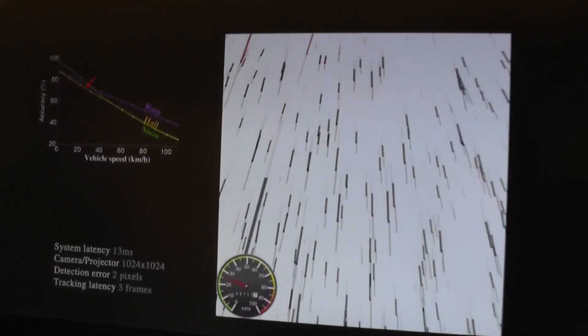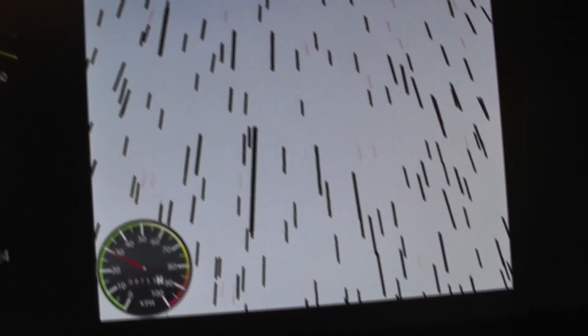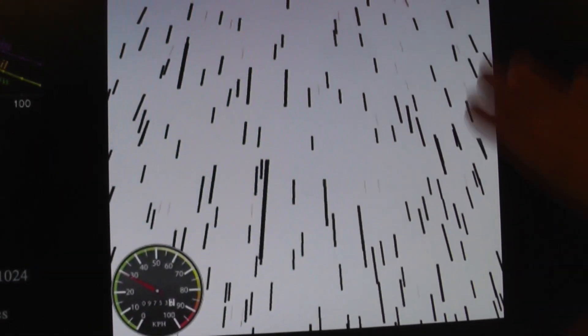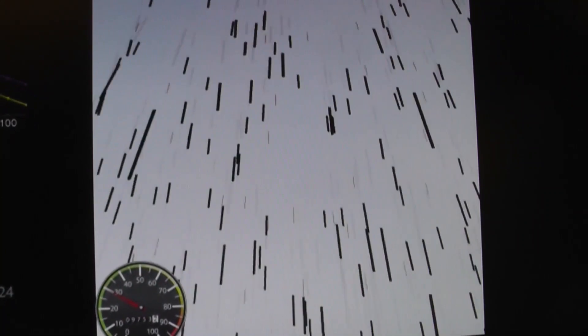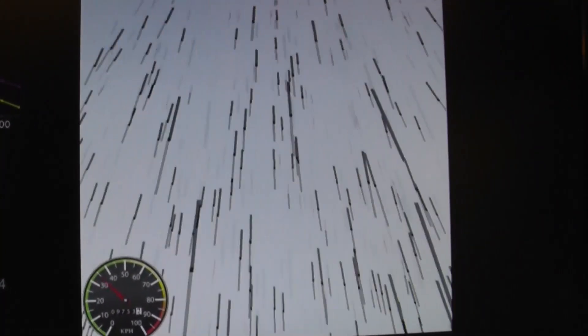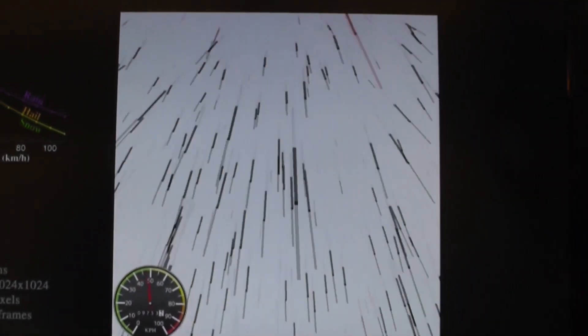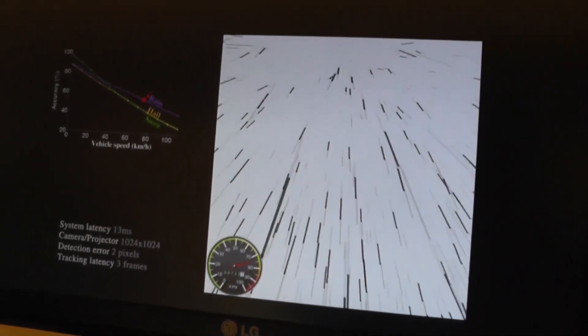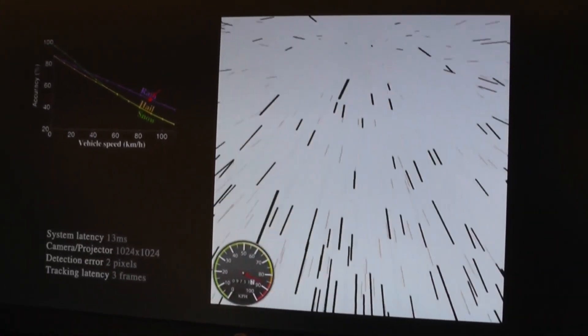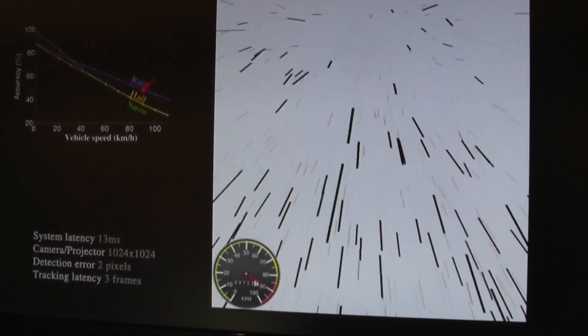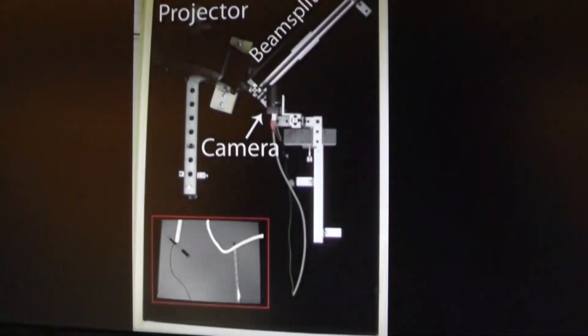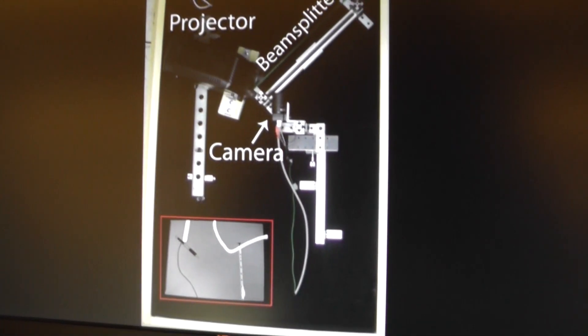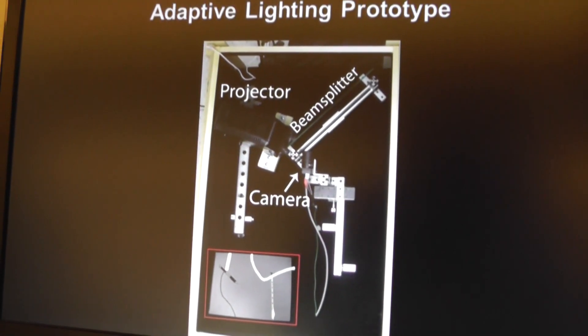As the car accelerates through this very heavy rainfall you can see the angle of the raindrops changes. A few more raindrops are making their way through but it's still pretty accurate as far as being able to block out most of those raindrops as they fall. At 90 kilometers per hour those raindrops are almost coming straight at the headlight, but it's still able to successfully not illuminate about 50% of them.